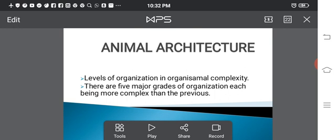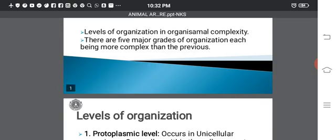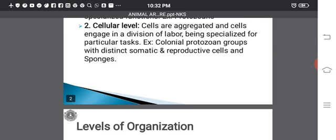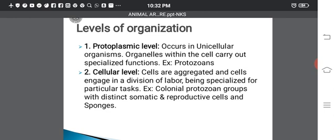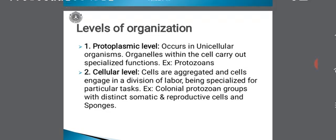There are different levels of organization in organisms, in animals in particular. The levels of organization in organismal complexity — there are five major grades of organization, each being more complex than the previous. The following types of levels of organization are seen in animals.